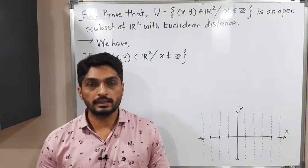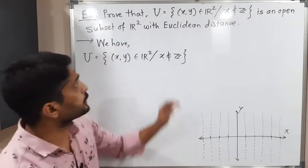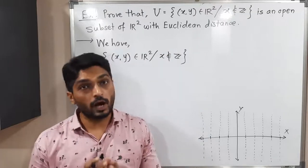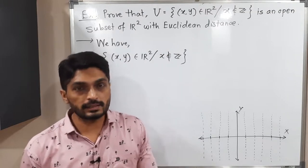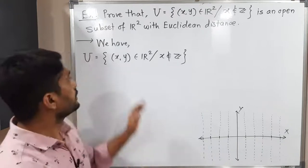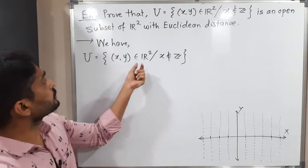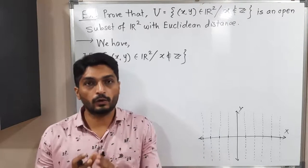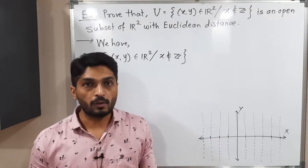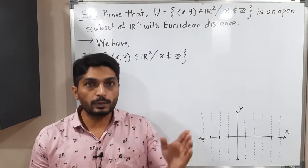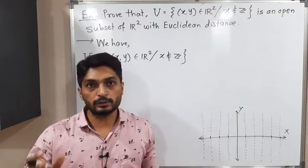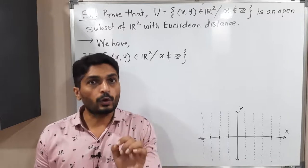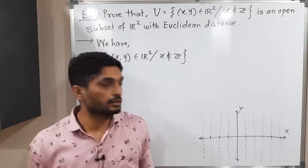Let us discuss this example. We have a set U and we have to prove that it is an open subset of ℝ² with Euclidean distance. Set U is a collection of elements of ℝ² such that x is not an integer — the x-coordinate should not be an integer. Integers are 0, 1, 2, 3, 4, and -1, -2, -3, and so on.